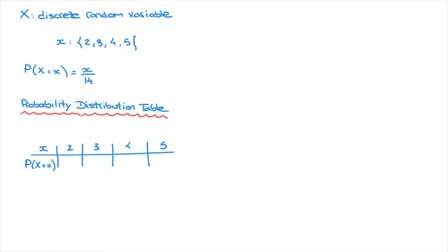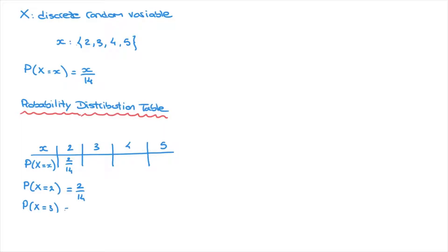To complete the second row we calculate the probability that x equals each value. Starting with P(X = 2): we replace x with 2 in the probability distribution function, giving us 2/14. We add that to the table. For x = 3, the probability is 3/14, which we also add to the table.